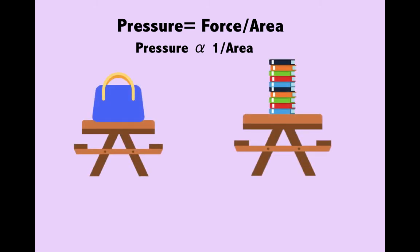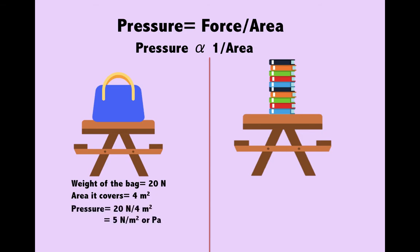So I have both my tables back here and we are going to compare the two. Now for this example I'd like you to assume that the weight or the force applied by both is the same. So firstly let's come to the bag. So the weight of the bag is 20 Newtons. The area it covers is extremely large, it is 4 meters squared. Then we can calculate the pressure using the formula pressure is equal to force by area.